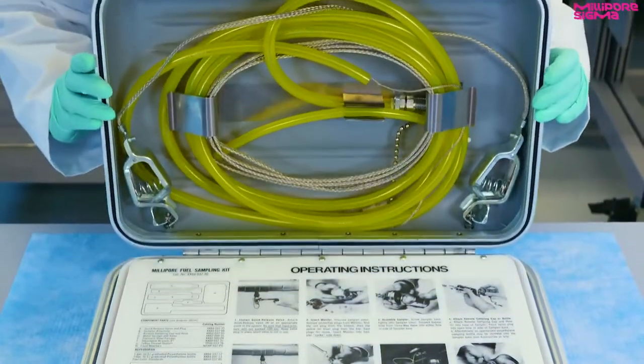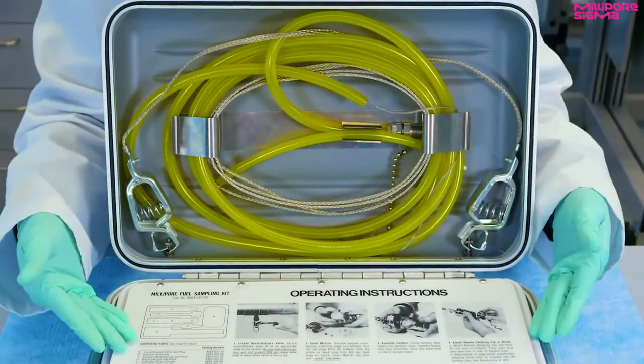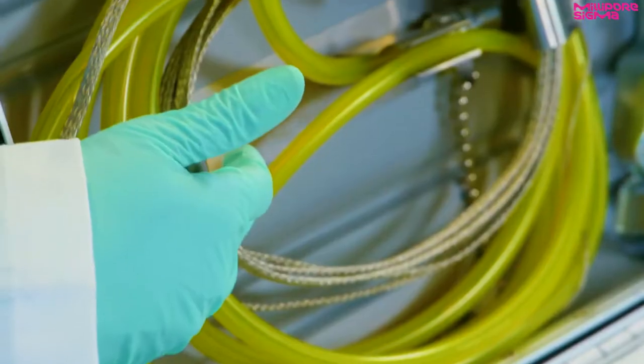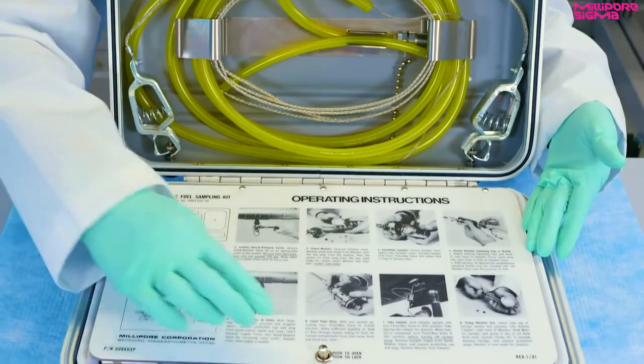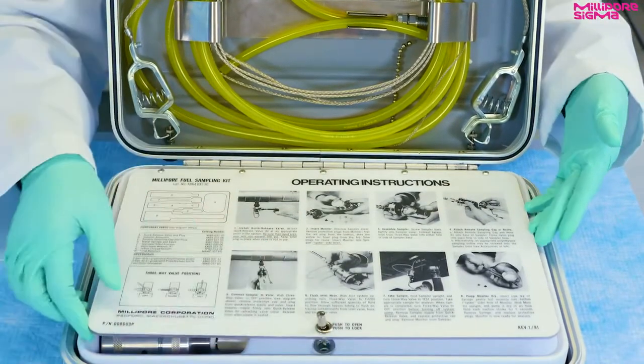This is the fluid sampling kit. General operating instructions are provided inside the kit. The hose and the grounding wire to the remote sampling assembly are found inside the lid. Let's take a look inside the kit.